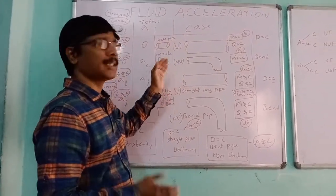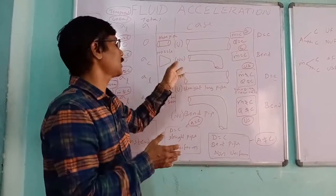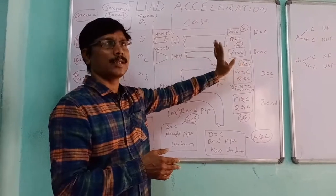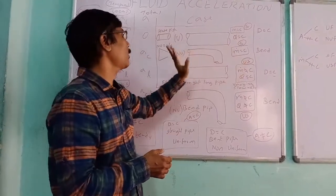Next is nozzle. Nozzle is a converging cross section, so we can get non-uniform flow. And in the nozzle, the mass flow rate is constant. So it is steady and non-uniform flow.